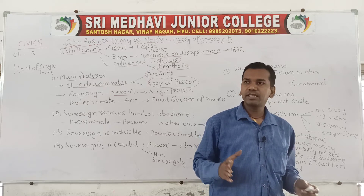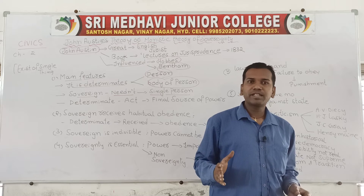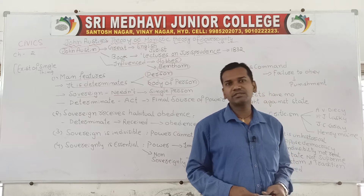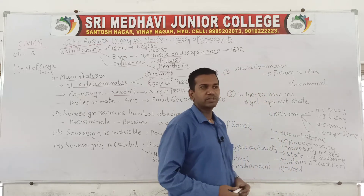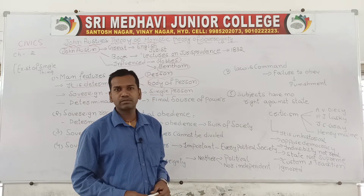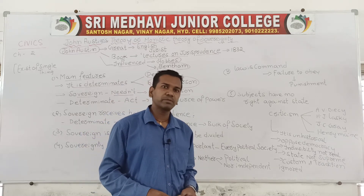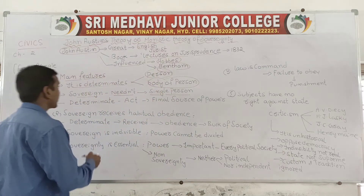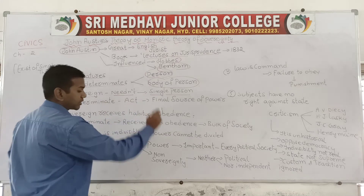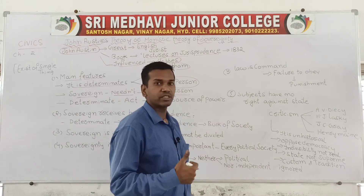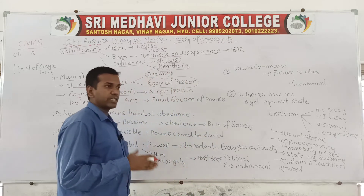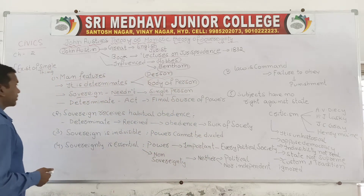When you are running any government, it is not one person but different types of people who run the government. Government is not contained of one person; the sovereignty does not lie upon one person — there are many persons. His theory makes clear that sovereignty need not be under the control of a single person, and the power must lie under the state.